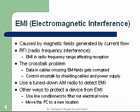EMI — electromagnetic interference — is caused by magnetic fields generated by current flow. Motors are probably the most common cause of EMI. RFI, radio frequency interference, can come from many different sources such as microwaves and cell phones. Crosstalk is when data signals in cables cross and influence each other, corrupting data. We can control crosstalk by shielding cables and in the power supply.